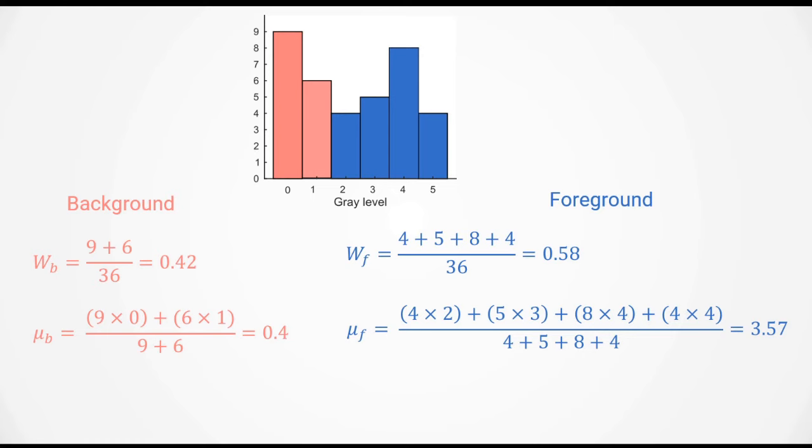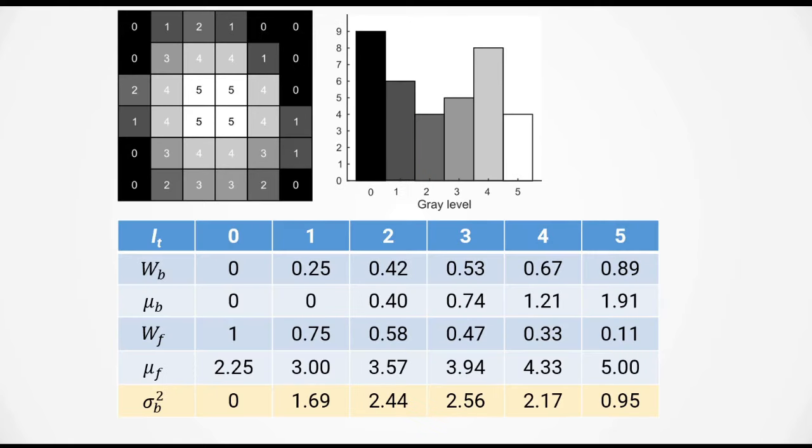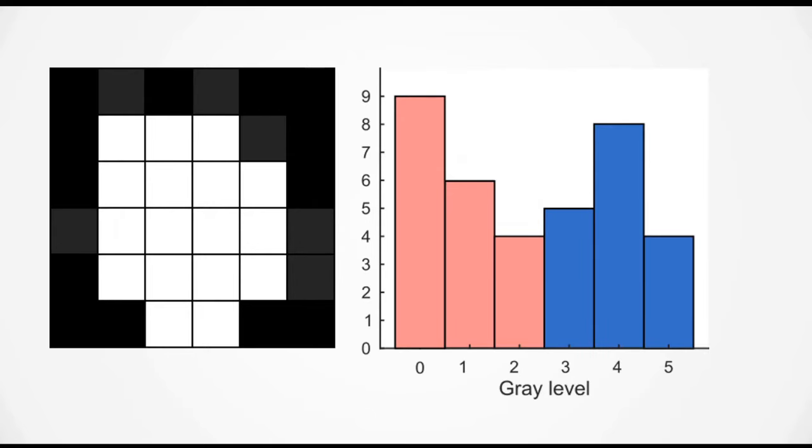With the weights and mean intensities computed, we can insert them into the equation and compute the between class variance which is 2.44. You can repeat this computation for every possible threshold intensity and get a list of between class variances. The optimal threshold intensity is the intensity that gives you the highest between class variance. In this case, the highest is 2.56 which corresponds to a threshold value of 3. This would be the output of Otsu's method. Any pixels with values less than 3 will be the background and any pixels with values of 3 or greater is the foreground.